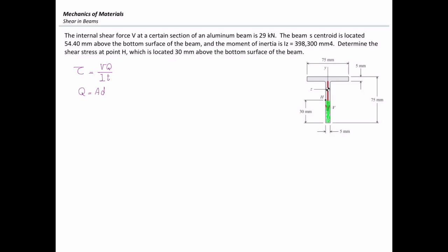Area is simply 30 times 5. To determine D, I should note that the location of centroid of section is 54.4 mm above the bottom surface of this beam, and the centroid of the hatched section is located 30 over 2 or 15 mm from the bottom surface of this beam. So D can be calculated as 54.4 minus 15, which is equal to 39.4 mm. That gives me Q equal to 150, which is area, times 39.4, which is D, and the final value of Q would be 5910 mm cubed.